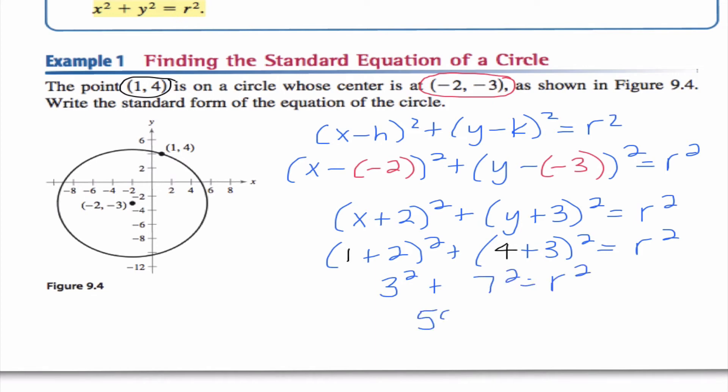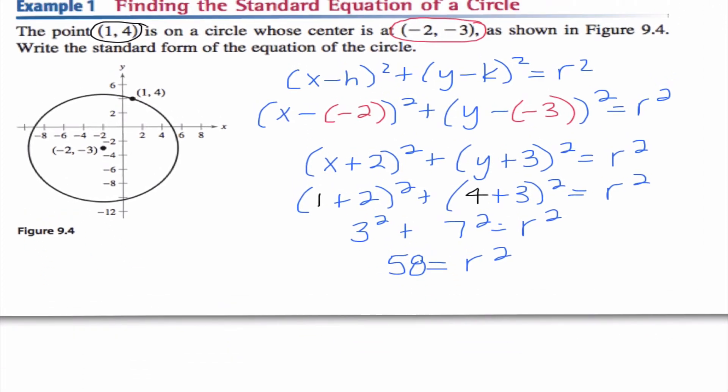So when I do that math, I get 58 = r². Now notice we don't care what r is. We just want to go ahead and write (x + 2)² + (y + 3)² = 58.